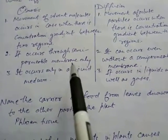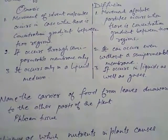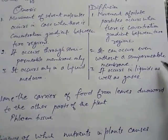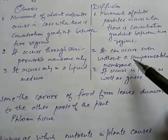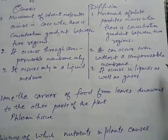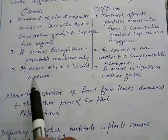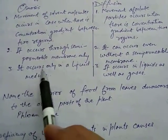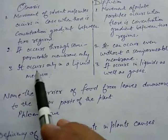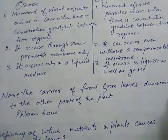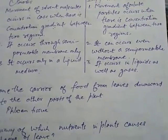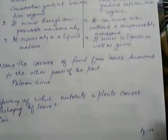Osmosis occurs through semi-permeable membrane only. Diffusion can occur even without a semi-permeable membrane. Osmosis occurs only in liquid medium, but diffusion occurs in liquid as well as gases. This is a major difference.